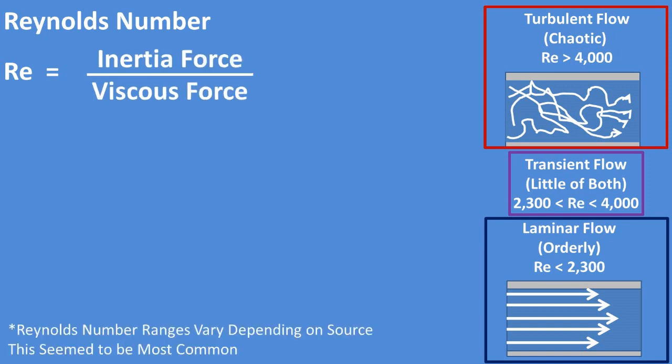The equation for the Reynolds number is inertial force of the fluid divided by the viscous force of the fluid. This is essentially a formula that compares the inertial force or force that keeps the fluid moving to the viscous force or internal resistance for the fluid to flow.